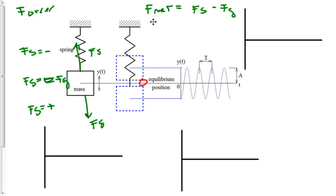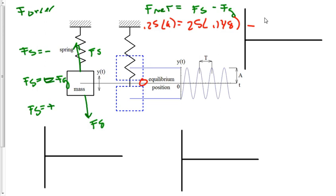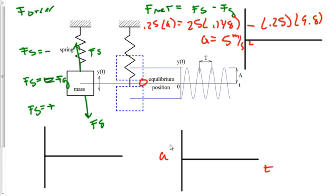Let's plug in numbers. Force net: 0.25 times a equals force of the spring minus force of gravity. At the lowest position, spring force is 25 times 0.148. Then we subtract force of gravity, which is 0.25 times 9.8. We get an acceleration equal to 5 meters per second squared. So we've got a positive 5 here and a negative 5 on the acceleration graph.